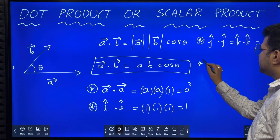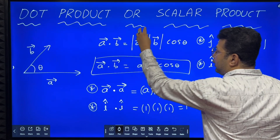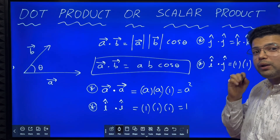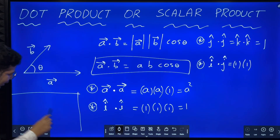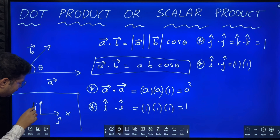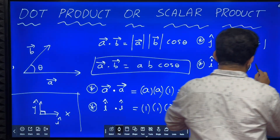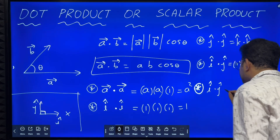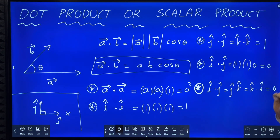What is i cap dot j cap? i dot j equals magnitude of i into magnitude of j — both are one since j cap is a unit vector along the y-axis. What is the angle between i and j? i cap is a unit vector along the x-axis, j cap is a unit vector along the y-axis, so the angle between i and j is 90 degrees. Cos 90 degree is zero. Therefore i dot j is equal to zero. Similarly, i dot j equals j dot k equals k dot i, all are equal to zero.